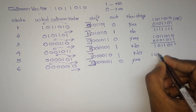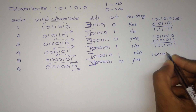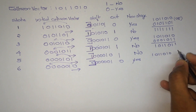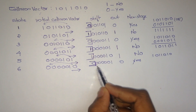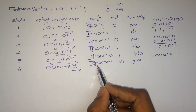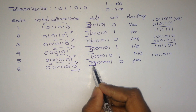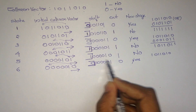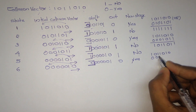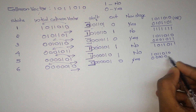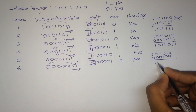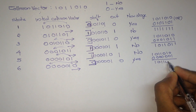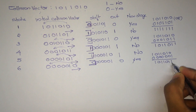The initial collision vector is 1, 0, 0, 1, 0, 1, 0, and the shifted value is 0, 0, 0, 0, 0, 0, 1. Therefore we perform OR operation with these values, and it will become 1, 0, 0, 1, 0, 1, 1.